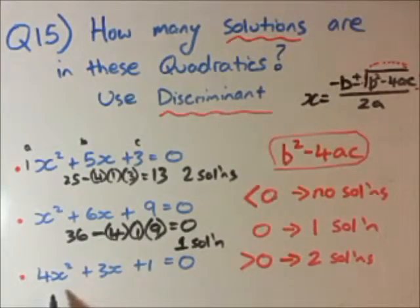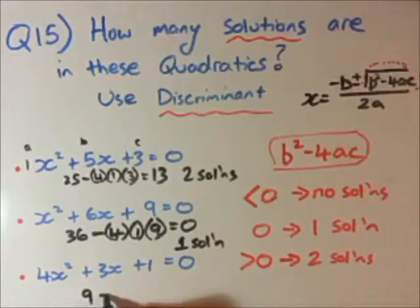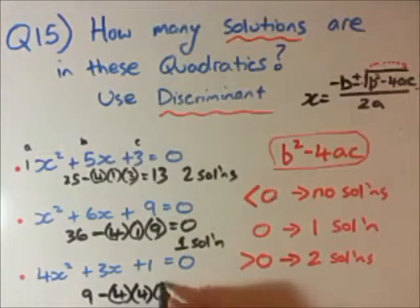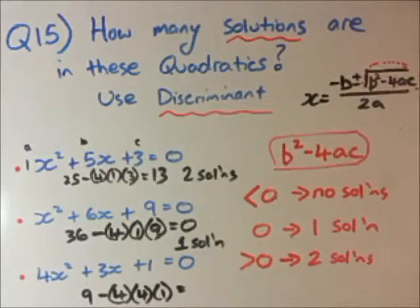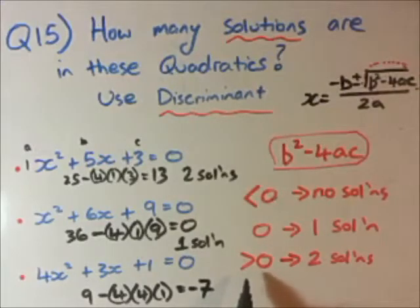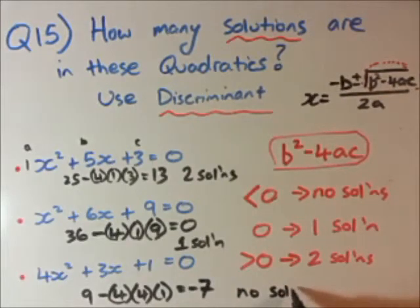Last one: b squared is 3 squared which is 9, minus 4 times a, which is 4, times c, which is 1. So 4 times 4 times 1 is 16, and 9 minus 16 gives a negative number — minus 7. That is less than zero, so there will be no solutions to this quadratic. And that's how you do these questions — it's pretty simple really.